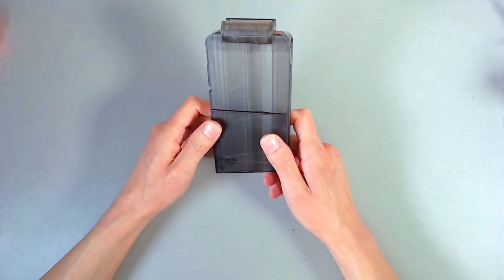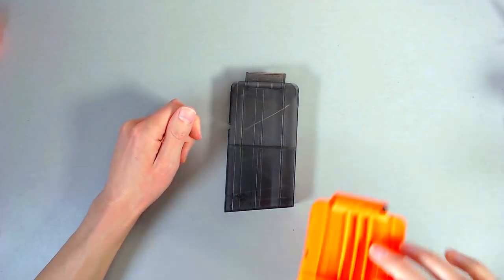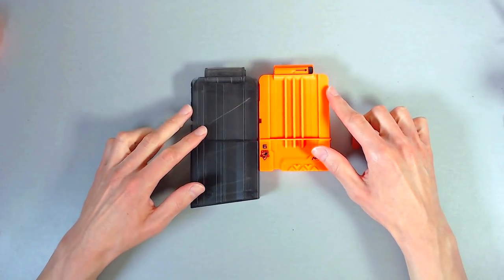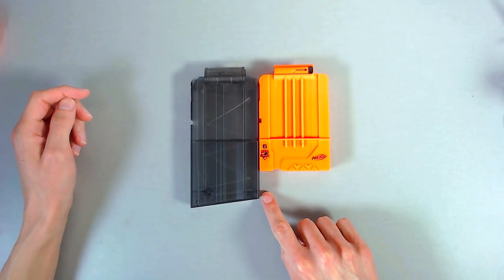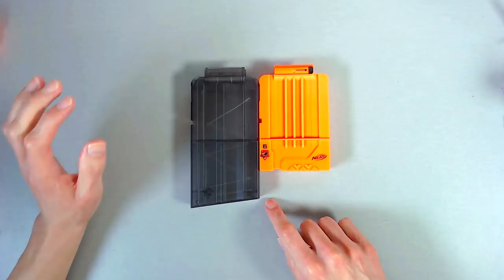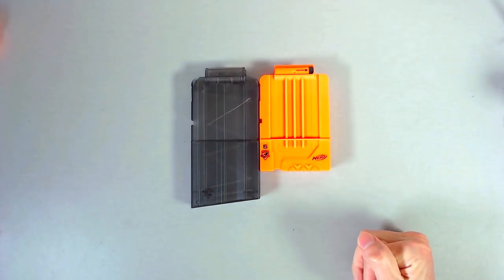Beyond that, it's so small. Look at, that's a six dart magazine. That's six darts. And you've got that little bit extra right there for four more darts of capacity. That's absurd. I love this. It is absolutely magical.